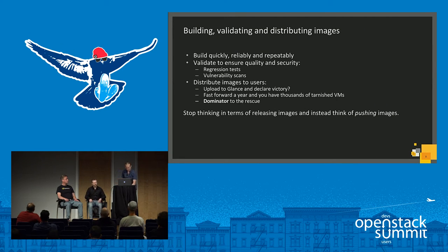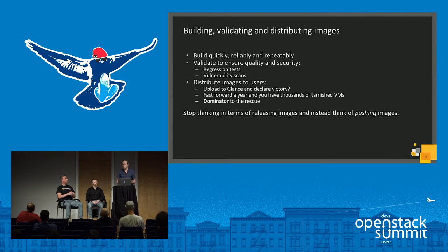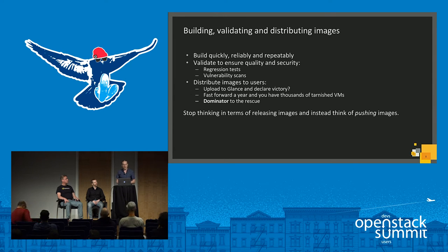When we want to build, validate, and distribute our images, to start off with, you want to be able to build your images quickly. You want to be able to do this reliably and repeatedly, so if you do one build, you do the next, you will get a successful build. Assuming you didn't specify changes in the content, you will get essentially the same image come out of the build each time.